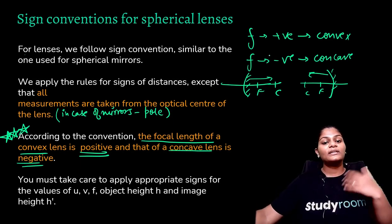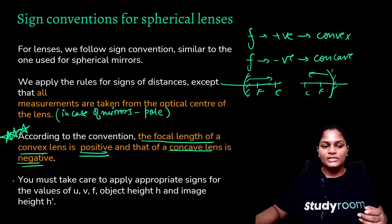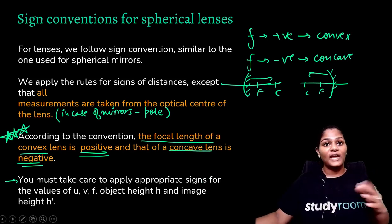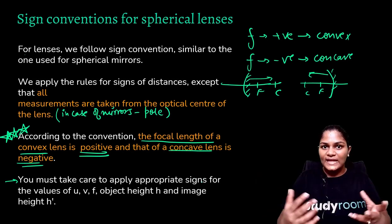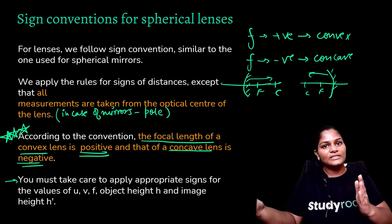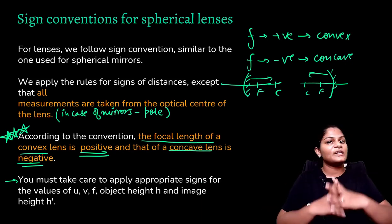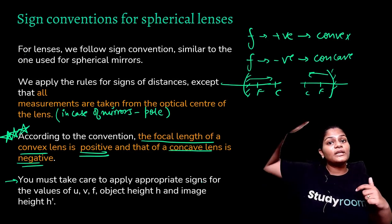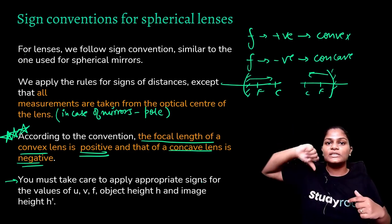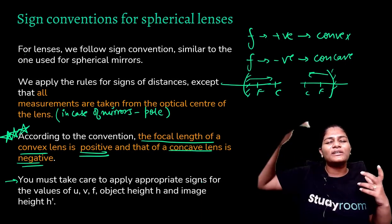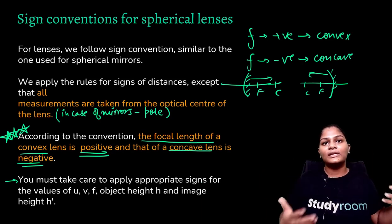Convex lens: focal length positive. Concave lens: focal length negative. Apply appropriate signs for u and f. To the right side of the optical center, all distances are positive; to the left side, all distances are negative. Upward from the principal axis is positive; downward is negative.